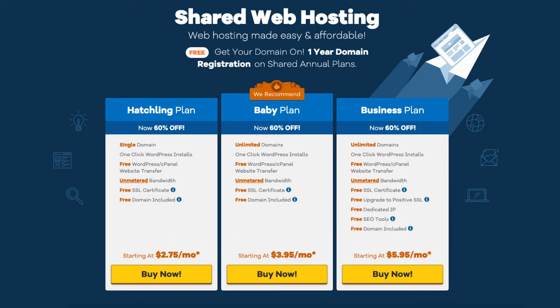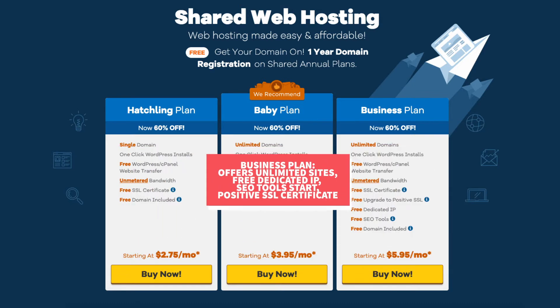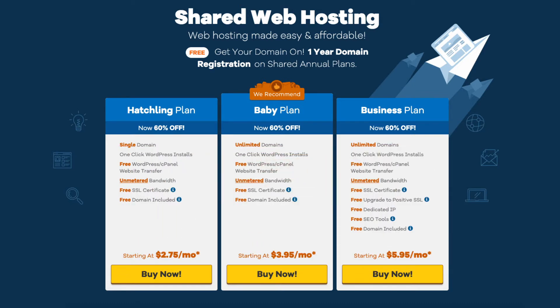The business plan comes with unlimited sites and includes a free dedicated IP, Hostgator's SEO tool start add-on, and a free upgrade to a positive SSL certificate. I recommend going with the hatchling or baby plan when starting out, and then you can always upgrade to the business plan as your site traffic and revenue grows. You can upgrade or downgrade to any of the plans at any time.